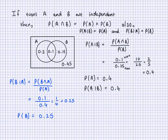So this is another thing we can say about independence. If events A and B are independent, probability of A given B equals probability of A, and probability of B given A equals probability of B. We've got a few formulas now: the conditional probability formula, the independence formula, and the addition formula. You can use all of these to set up equations and solve them for different scenarios.